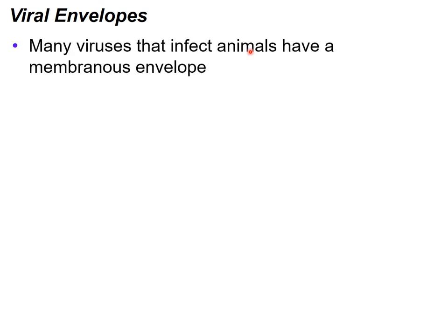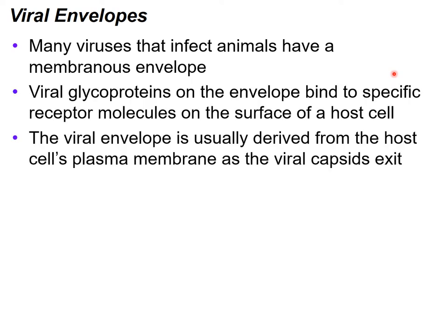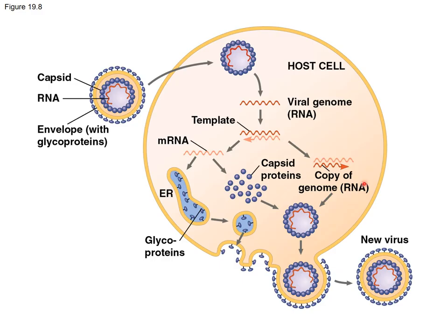Now let's talk about viral envelopes. Many viruses have a membranous envelope, and these are viruses that typically infect animals. The glycoproteins on the envelope usually bind to a specific receptor molecule on the surface of the host, so they are very specific. Many animal cell surface proteins recognize proteins with glyco components — carbohydrates attached to them. The viral envelope is usually derived from the host cell plasma membrane, which is why it is very similar to the host cell plasma membrane with glycoproteins attached.